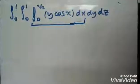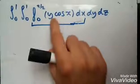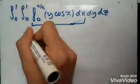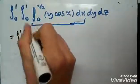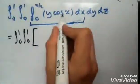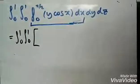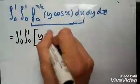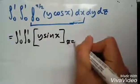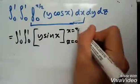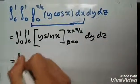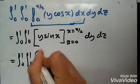First, we integrate with respect to x, treating y as a constant. The integral of cos(x) is sine x, so we get y·sine x. We then evaluate from x equals zero to x equals pi over two, giving us y·sine x with dy dz remaining.